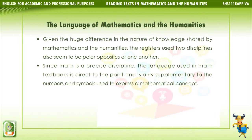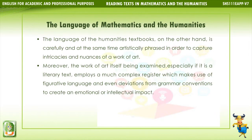The language of humanities textbooks, on the other hand, is carefully and at the same time artistically phrased in order to capture the intricacies and nuances of a work of art. Moreover, the work of art itself being examined — especially if it is a literary text — employs a much more complex register which makes use of figurative language and even deviations from grammar conventions to create an emotional or intellectual impact.